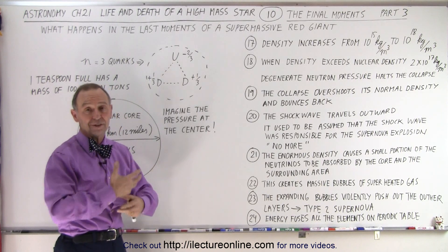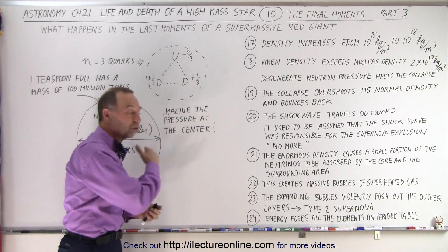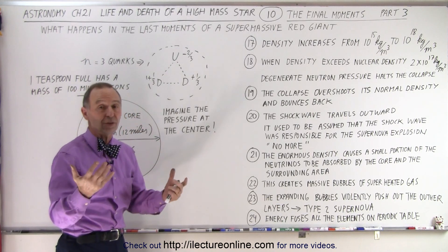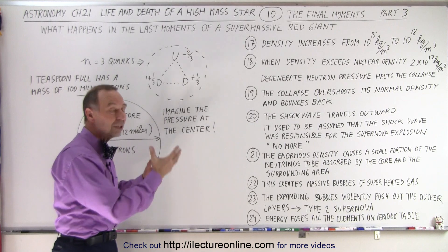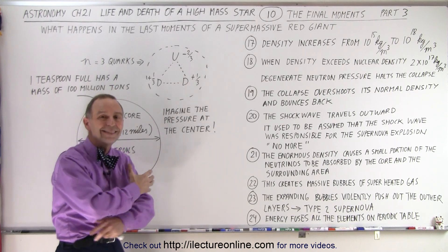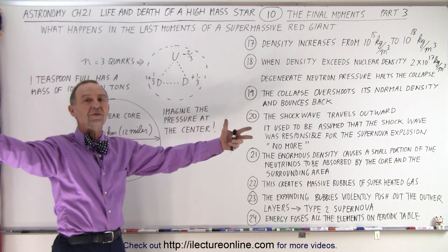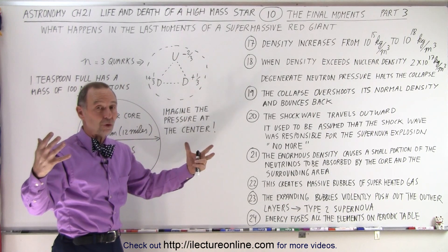All the elements, heavier than iron, are produced in that supernova explosion. All other elements, between hydrogen and helium and iron, are produced in that supernova explosion. It seeded the nebulas that were created from the explosion, what we call the supernova remnants, with all the material in the periodic table.